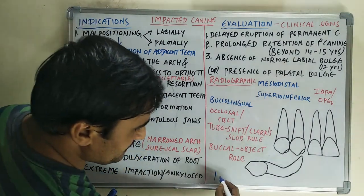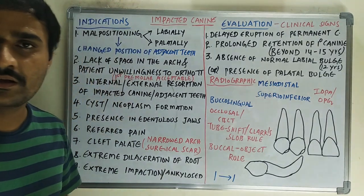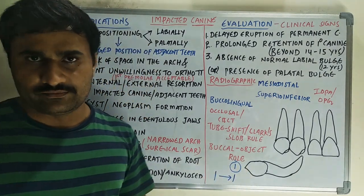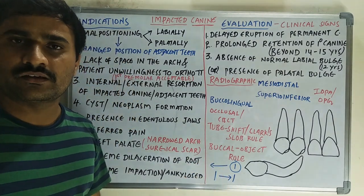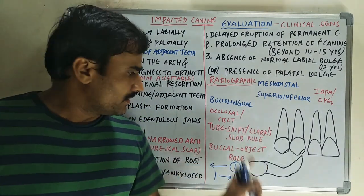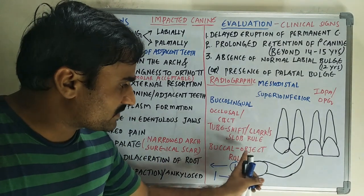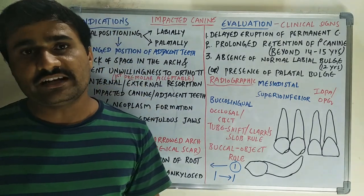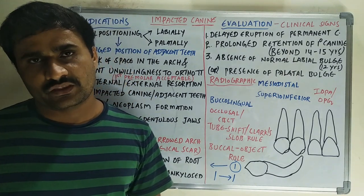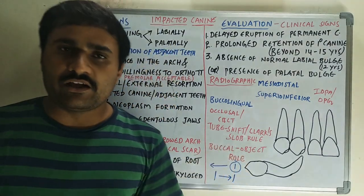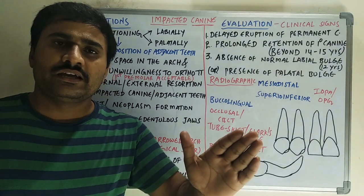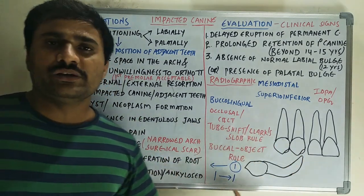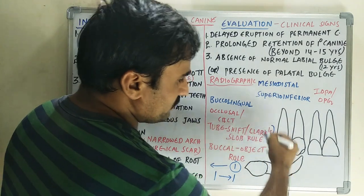When comparing both IOPAs: if the impacted canine moves in the same direction as the tube (radiation side), it is located on the lingual side; if it moves in the opposite direction, it is on the buccal side. The buccal object rule is conceptually similar but instead changes the vertical angulation by 20 degrees while keeping the horizontal angulation the same. If the object moves same direction, it is lingual; opposite direction, it is buccal. These techniques are used for localization of the canine.